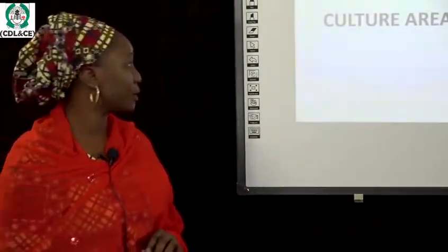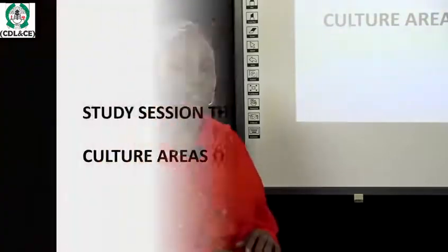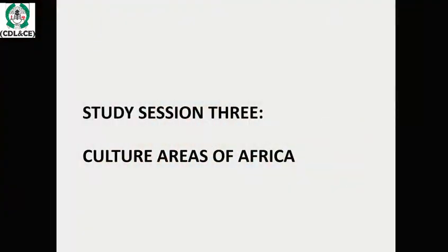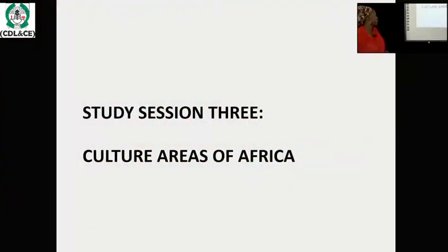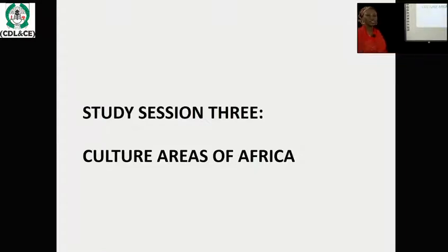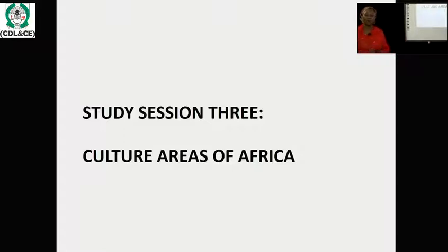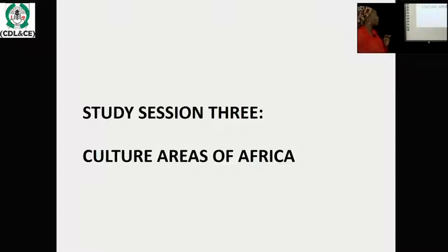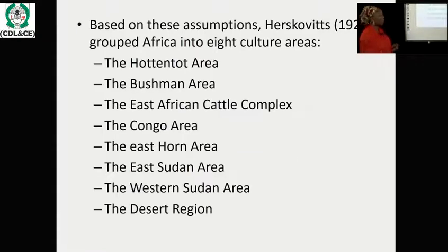This is the third session of African People and Society, continuing lesson two. Last session we talked about diffusionist theory and cultural areas of Africa, and we discussed how Herskovits was able to group the cultural areas of Africa based on five assumptions he mentioned.